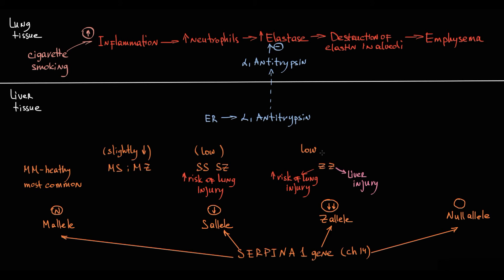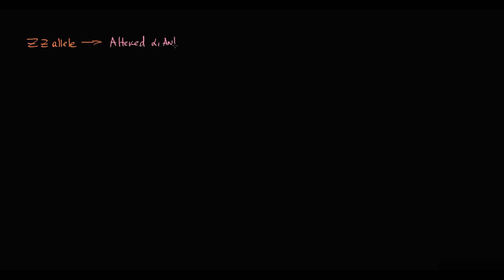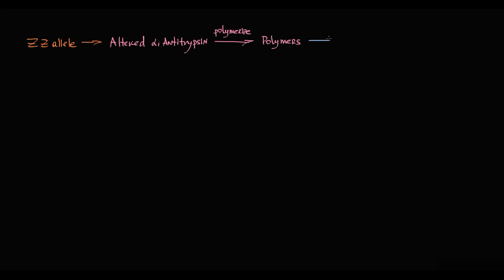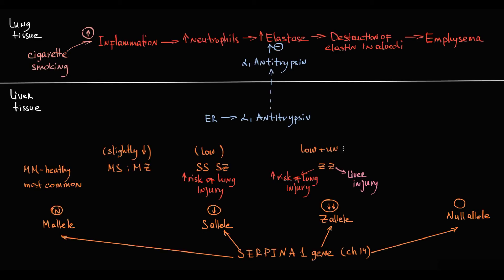With liver damage, it is not that simple. The ZZ variant produces not only a small amount of antitrypsin protein — these proteins also have a slightly different structure that makes them prone to polymerization. This polymerization occurs right after the protein is synthesized in the endoplasmic reticulum, and in the polymerized state, this protein cannot be secreted. Because of that, the ZZ variant is also called the unsecreted variant of alpha-1-antitrypsin.